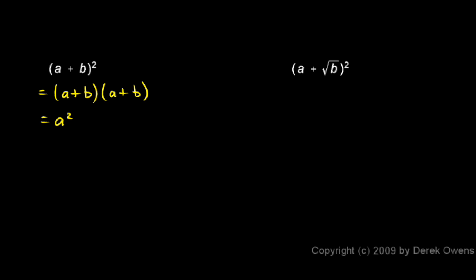So the first terms of each one give us an a squared, and then the outer is a times b, and the inner is a times b. So we have a times b and another a times b. So that's two a times b.